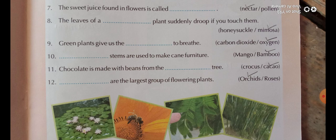The answer is mimosa. Question nine: green plants give us the dash to breathe — the answer is oxygen. Question ten: the dash stems are used to make cane furniture — roots or bamboo?